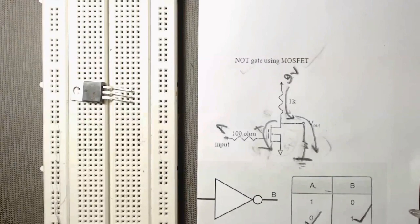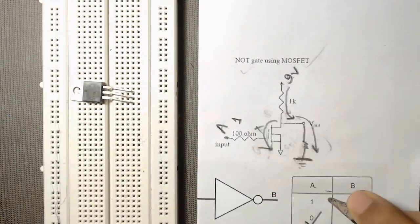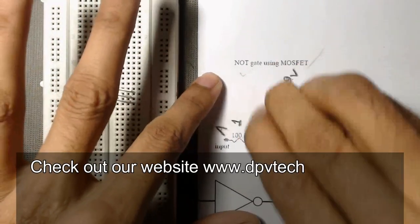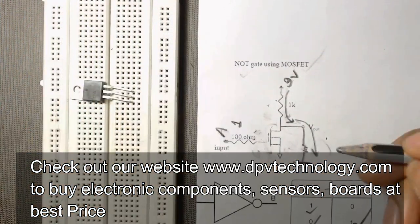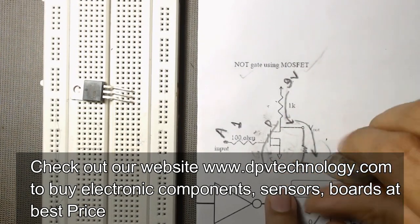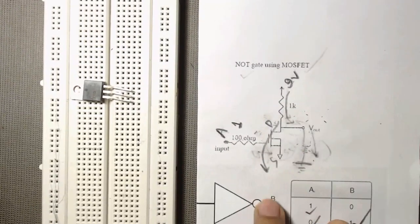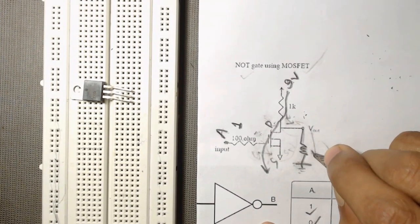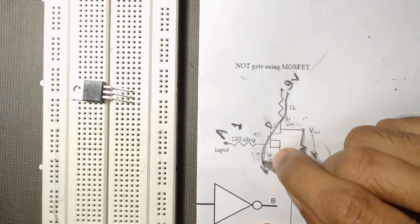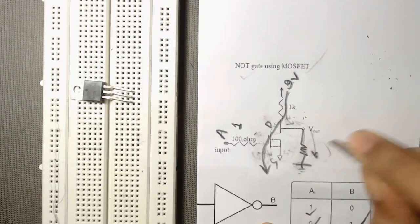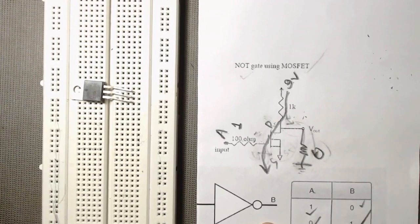Now if we apply voltage at terminal A — that means A is one — then the MOSFET will allow current to flow from its drain to source, so the current will flow through the MOSFET. Because there is resistance in the LED loop, the current will only flow through the path with low resistance. The entire current will flow through the MOSFET and there will be no current through the LED loop, so the output will be zero.